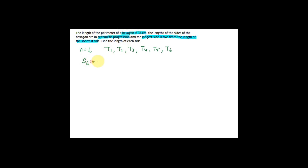You have to analyze the question. A hexagon is a six-sided figure, so you have the first term through to the sixth term. The perimeter is the sum of the first to sixth term, which is 36 cm — that is T1 + T2 + T3 all the way to T6. You also know that the longer side is five times the length of the shorter side, so the shorter side is the first term.